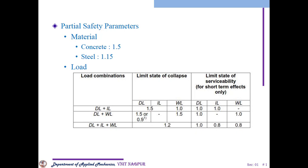As for partial safety factors, we know that there are two main materials — basically concrete and steel. Concrete has a partial safety factor of 1.5 and steel has a partial safety factor of 1.15. These two factors are specified by the Indian IS codes.